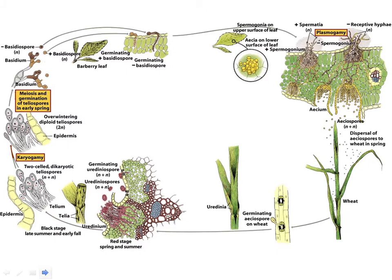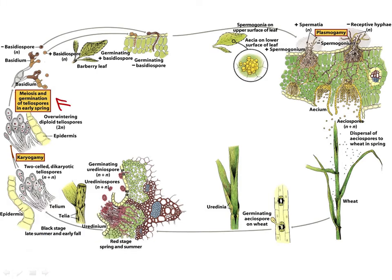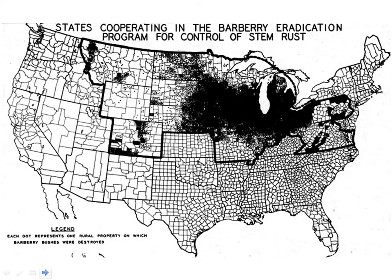So we're back to pretty much where we began — back to the process of meiosis, producing our haploid basidiospores. That's going to take place in the spring. Meiosis takes place in the spring, these things are shed, and they begin the infection cycle again.